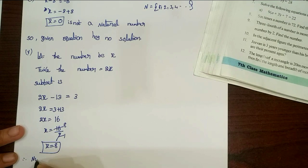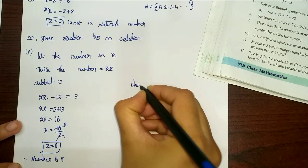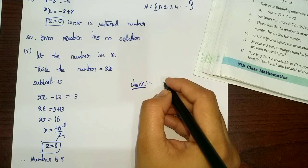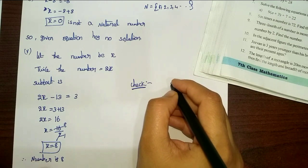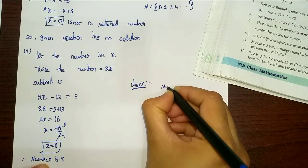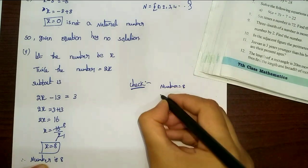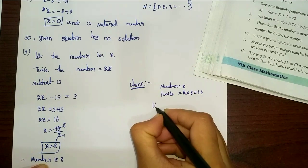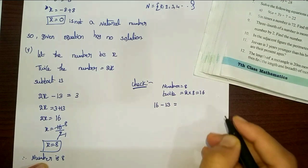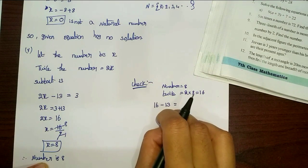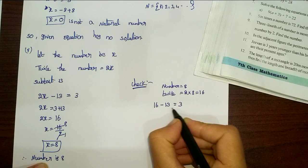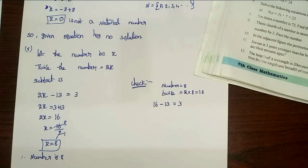So the number is 8. To verify: twice of 8 is 16. Subtract 13 from 16: 16 minus 13 equals 3. That gives 3, which matches the answer. So the number is confirmed to be 8.